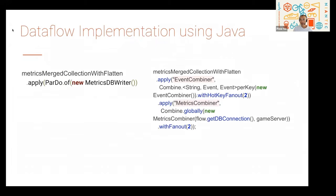Here is an example of what the code looked like before we applied this optimization on the left, and on the right is code after applying both combiners with fanout. The first combiner combines all events of the same type together into a single key, and then the second collects all the events and initiates the Postgres writes.